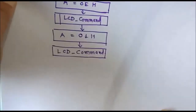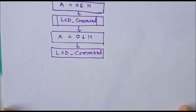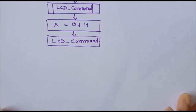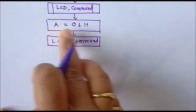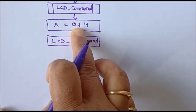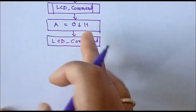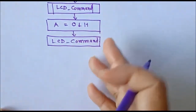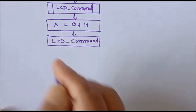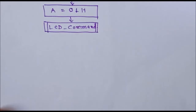Initialization is now over. If we want to specify a starting address to display a character, we can write a command: in the accumulator we specify the address — maybe 82H, 83H, or for the next row C0H or C1H — and then call the LCD command subroutine. The same steps are repeated to write any command in the command register.